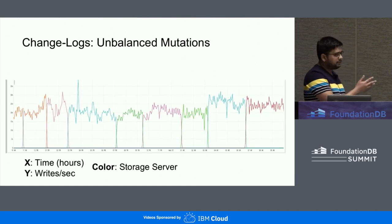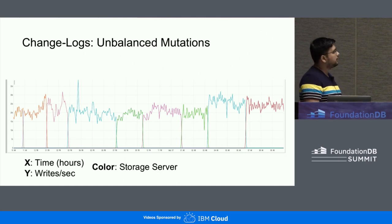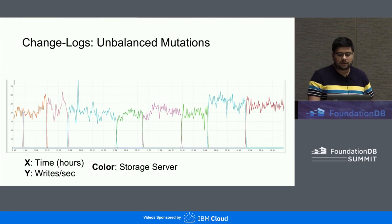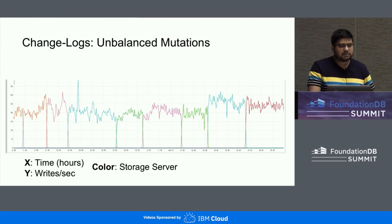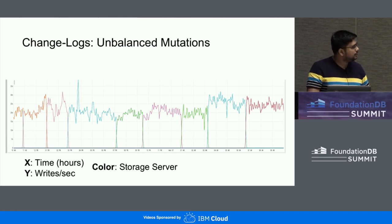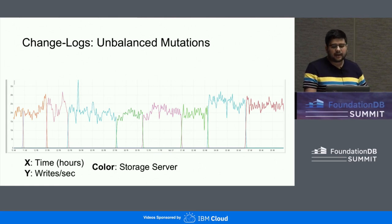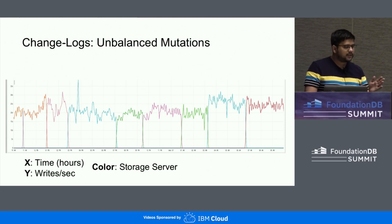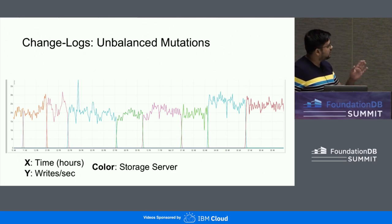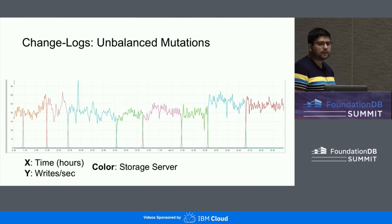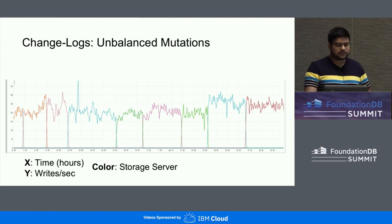This is a graph we plotted from one of our production systems. We were able to get this out by using a feature called locality info that FDB provides. This gives us the range boundaries hosted on each storage server. In our layer codebase, we tag each of the writes and emit telemetry for it, which tells us where that write key is going — to which server. In this case, we have a replication factor of two, and we can see that each write is going to exactly two storage servers. They are so precisely overlapping that you can see only one color.